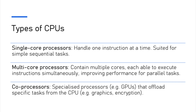CPUs come in different types of configurations, including single core, multi-core, and co-processors. Single core CPUs only have a single processing unit, meaning they can only handle one task at a time — more often found in entry-level or older machines. They are adequate for simple tasks and can run more than one application through multitasking, but the single core has to be shared between those applications, so performance can be impacted.